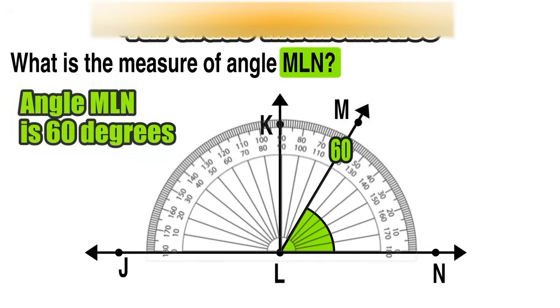Our conclusion is that angle MLN is 60 degrees, and we are finished with this question. This is a little bit more practice helping you to understand how to use a protractor to find the measure of a given angle, and that's really all there is to it.